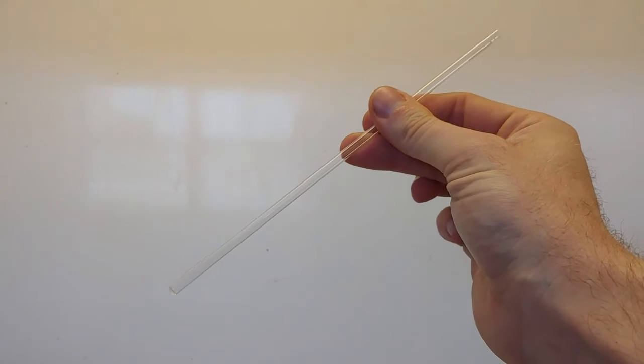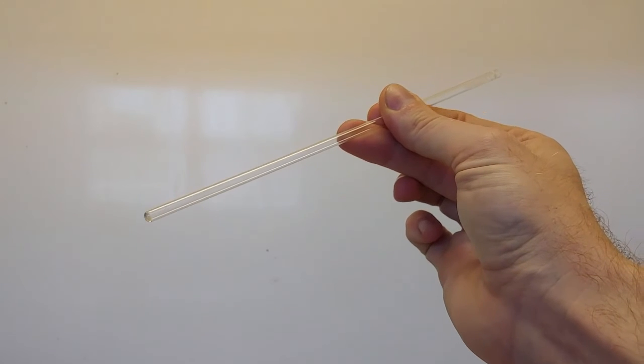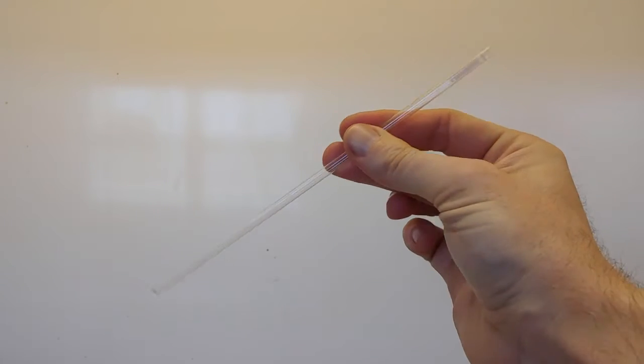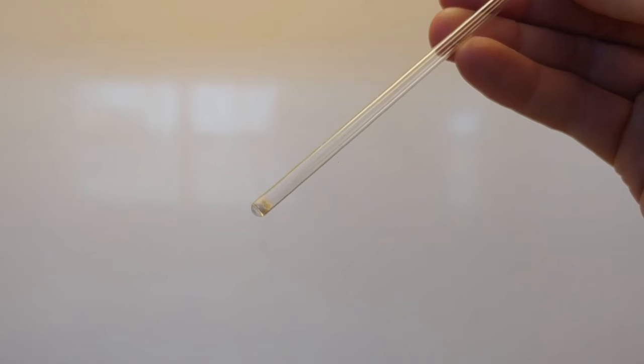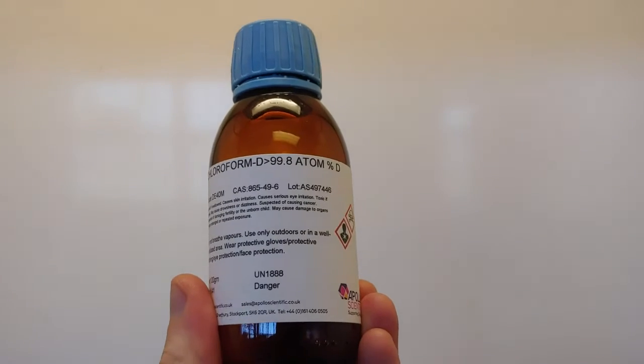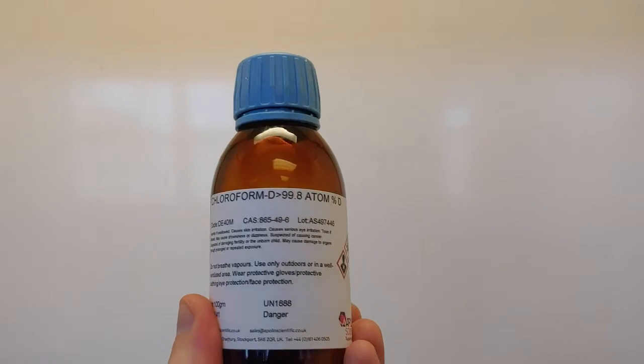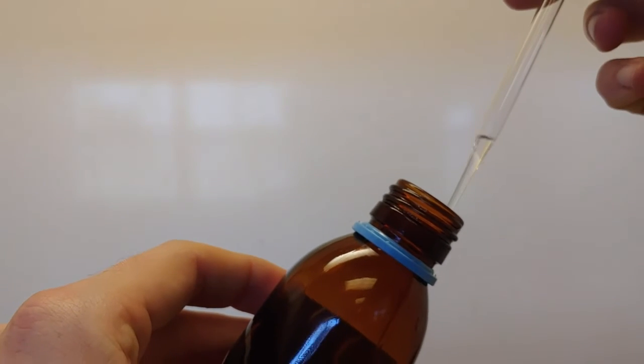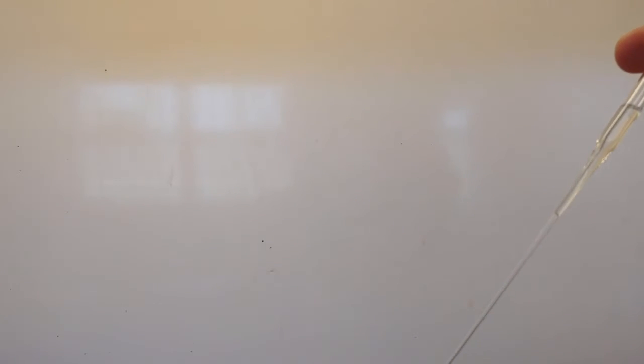To actually run an NMR spectrum first we'll need an NMR tube and this is basically a very long thin glass test tube. We load our sample in there, you can see it as a powder, you generally only need about 10 milligrams. And then we use a deuterated solvent, so this is a solvent where all of the proton nuclei have been replaced with deuterium because deuterium doesn't show up in a proton NMR spectrum.